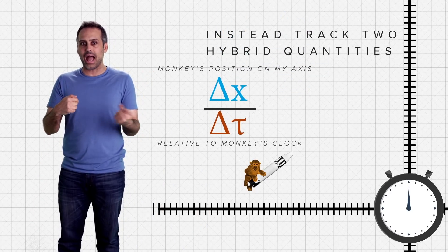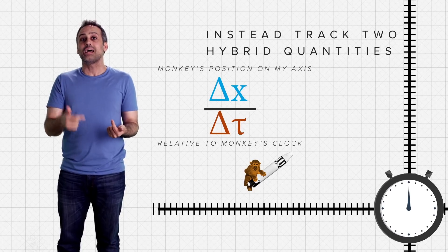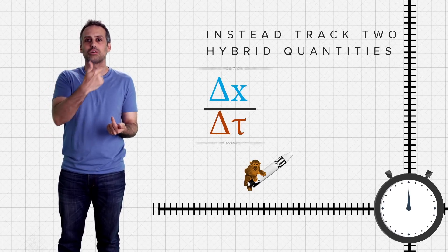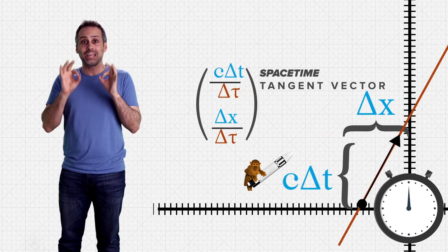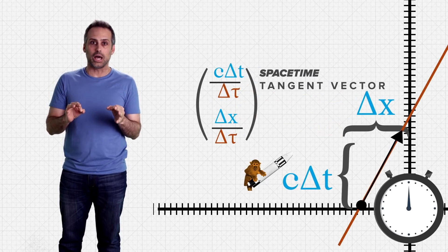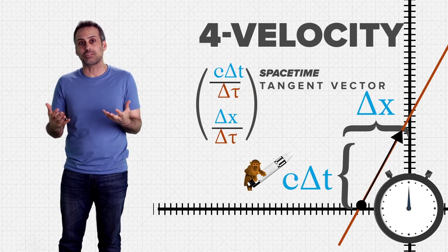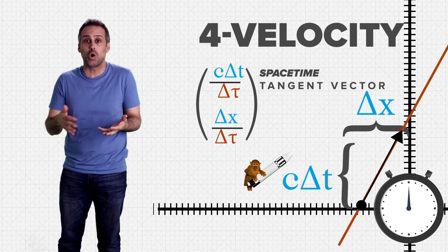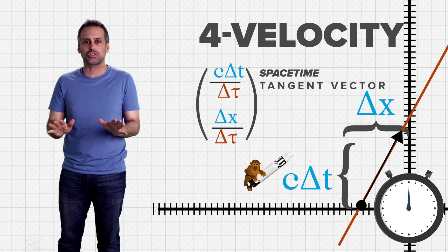The monkey's position on my axis relative to the monkey's clock and the time on my clock relative to the monkey's clock. That, it turns out, if I stack it, is the tangent vector to the monkey's world line. It's called the monkey's four velocity, even though that's a bit of a misnomer, since there's no motion through spacetime, just a term.